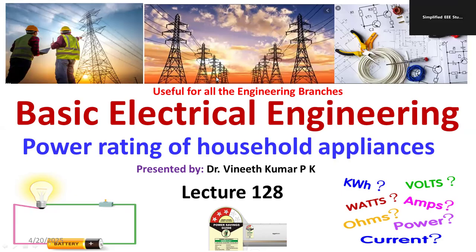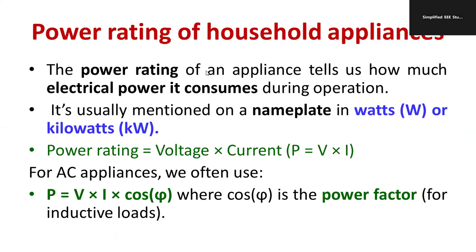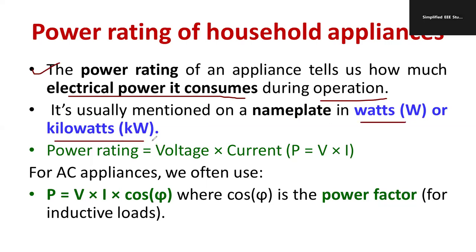Have you ever heard about power rating of household appliances? The power rating of an appliance tells us how much electrical power it is consuming during operation. Usually, the power rating is expressed in the form of watts or kilowatts, and it is typically mentioned on the nameplate of different types of appliances.